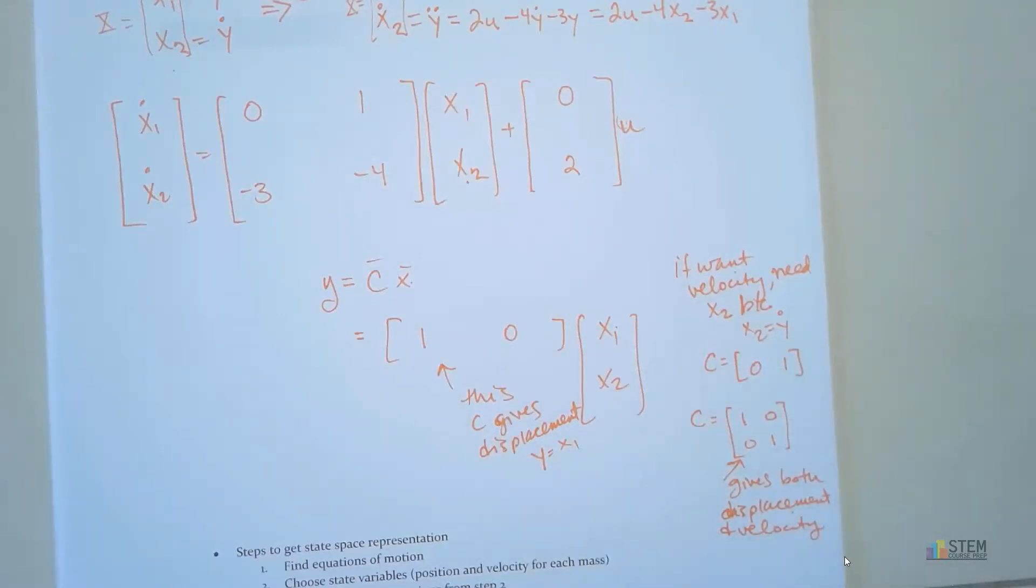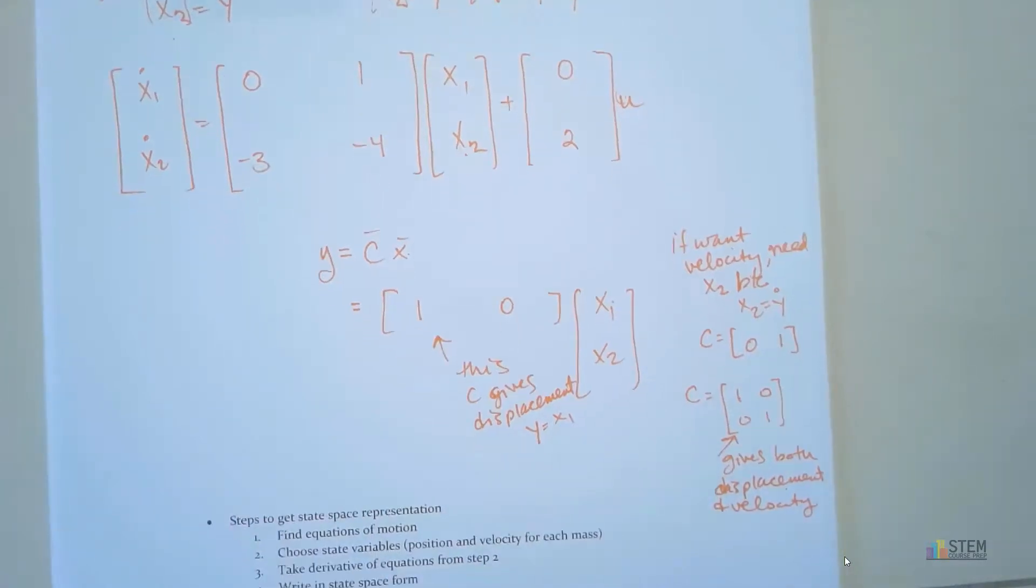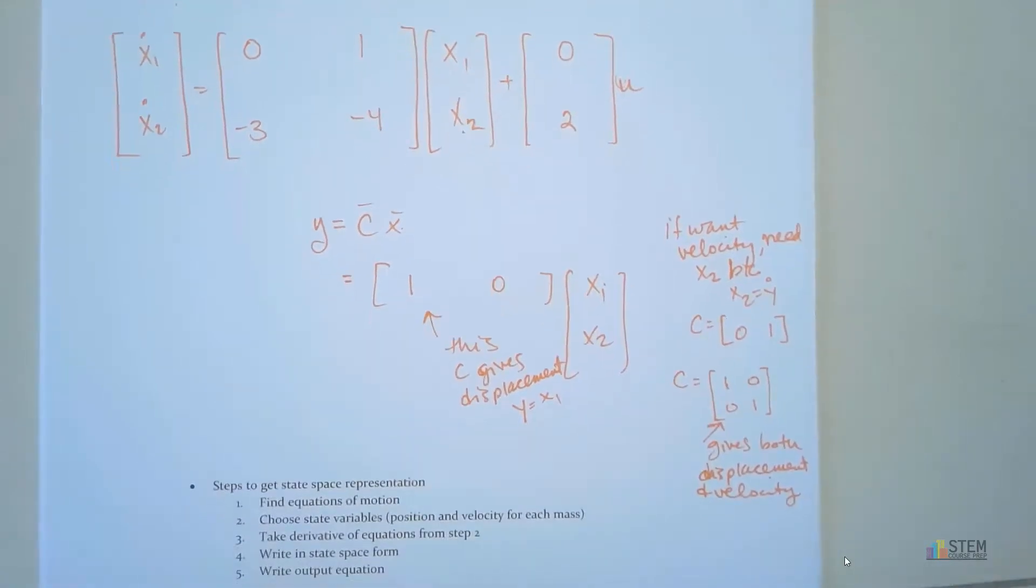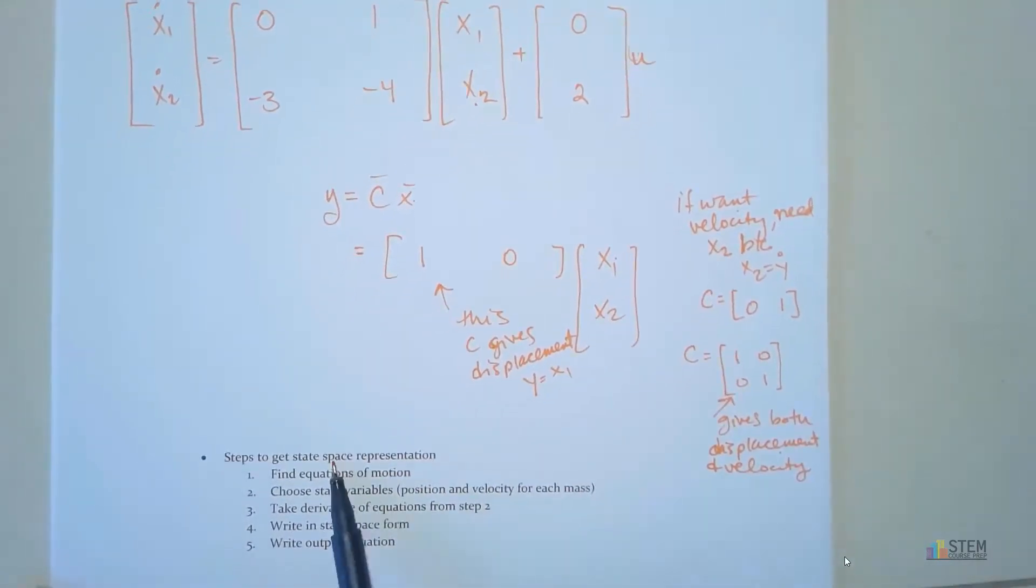We'll talk about it more in the other examples in case this still isn't very clear. It might make more sense when we get to a problem with an actual picture. And then after this, I wrote down some steps. So these are just general steps you can take to get your state space representation.